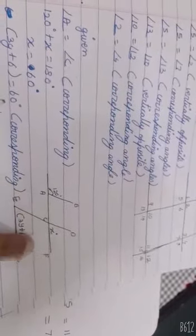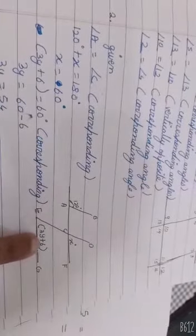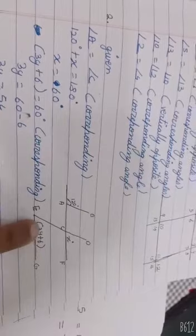When x equals 60 degrees, see x and 3y plus 6 are equal because they are corresponding angles. See this angle and this angle, because these two are parallel. So when you equate, you will get 3y plus 6 is 60 degrees. 3y is 54 degrees, which means y is 18 degrees.